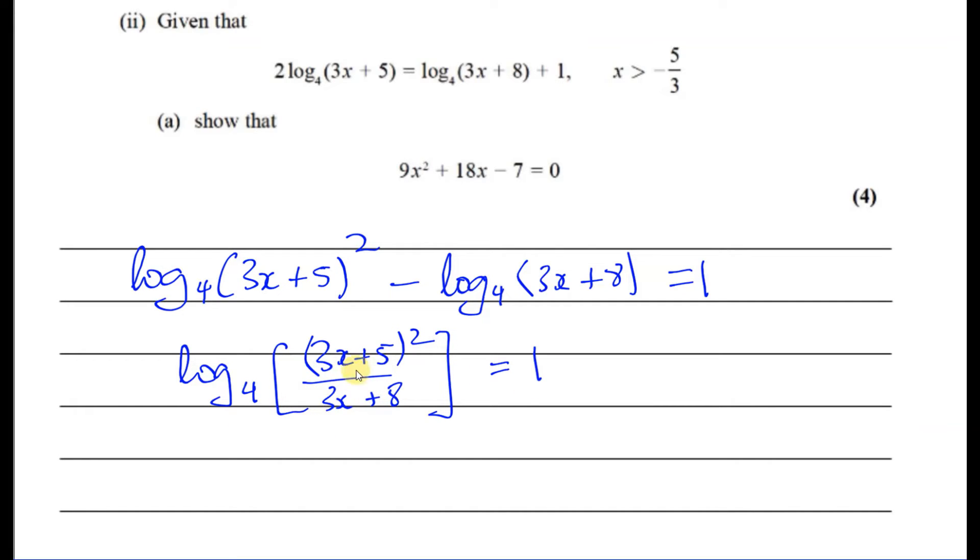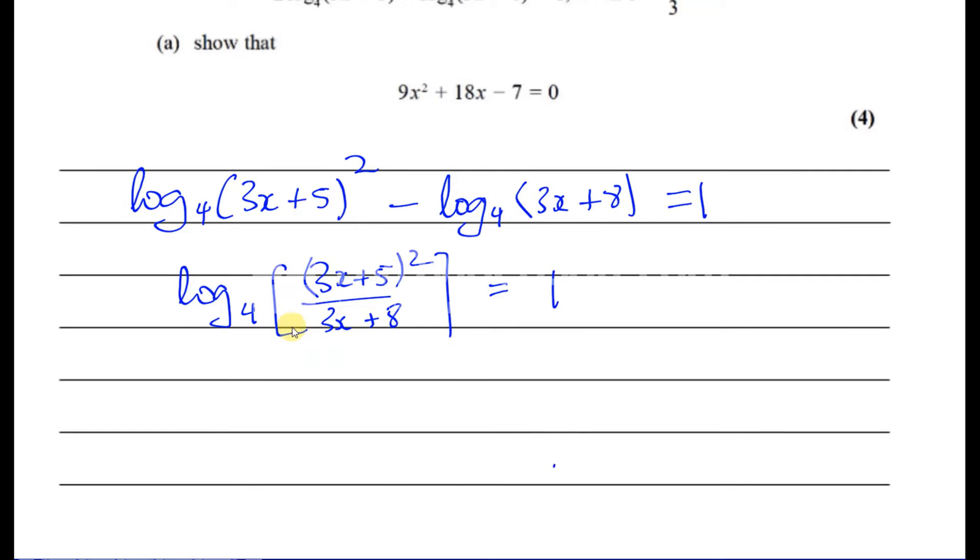There's no problem there. Log to the base 4 of 3x plus 5 squared over 3x plus 8 is equal to 1. Now I can use the basic definition of logarithms. This is the base. This is the power. Okay, so now, using the laws of the basic definition of logarithms, I can say that this is the base. This is the power. This is the result. So 4 to the power of 1, which is equal to 4, is equal to all of this. So we can say that all of this is equal to 4.